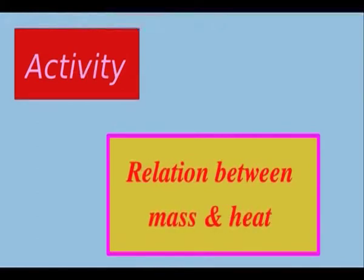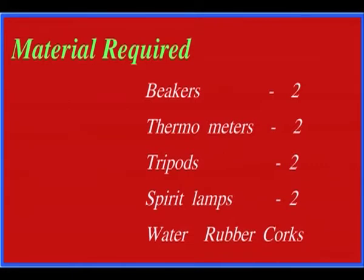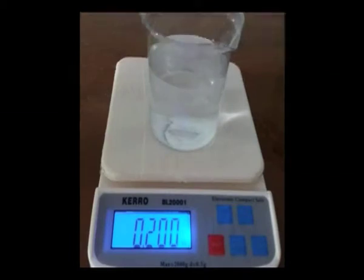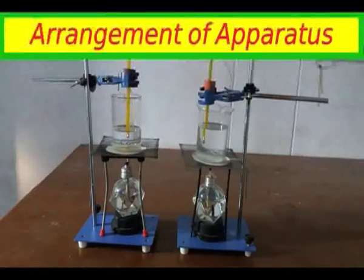In the next activity, we will find the relation between mass and heat. The materials required are: beakers, thermometers, tripods, spirit lamps, water, and rubber corks. Take two beakers of equal volume — 100 grams of water in one beaker and 200 grams of water in another beaker. With the help of two similar spirit lamps, tripods, retort stands, and thermometers, arrange the apparatus as shown in the figure.